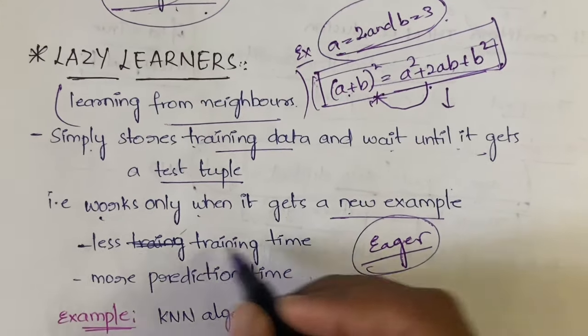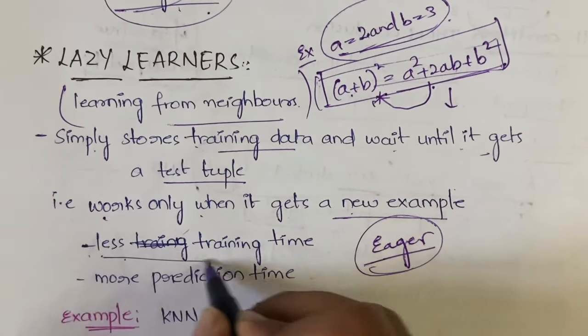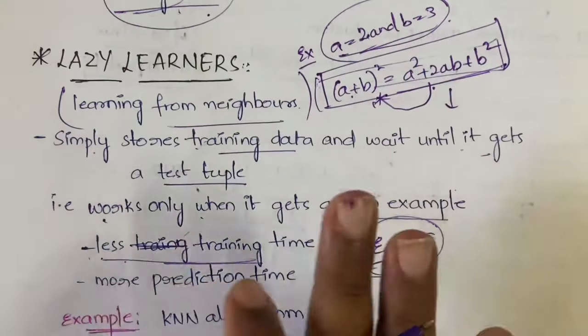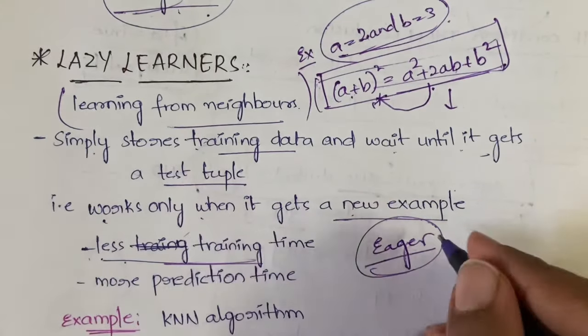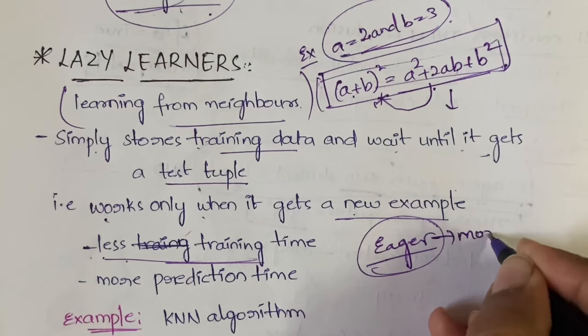So in case of lazy learning, it will have less training time because it will just learn - it's not doing any analyzing activity. But in case of eager learning, it will have more training time.